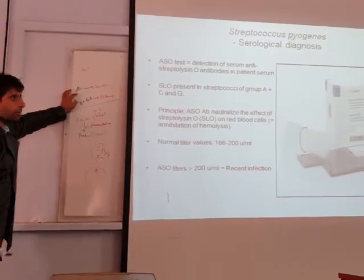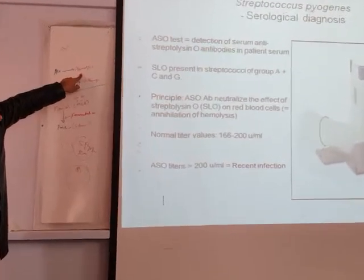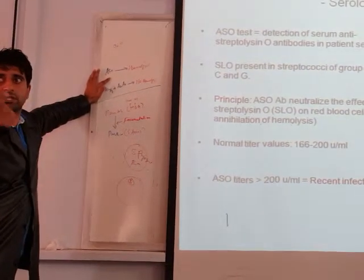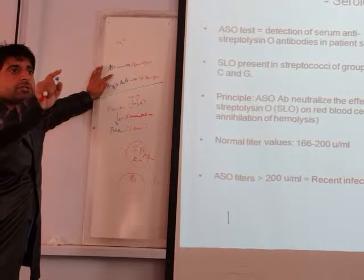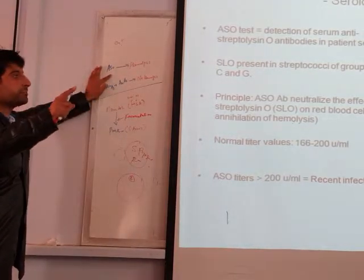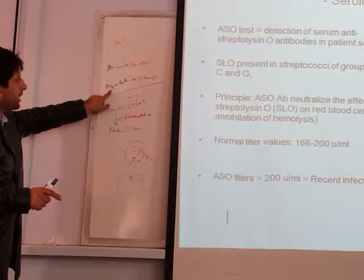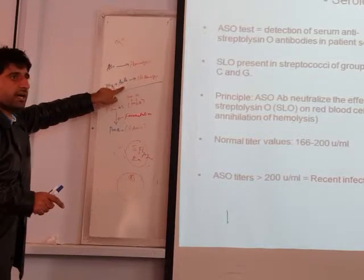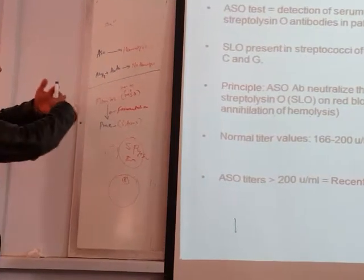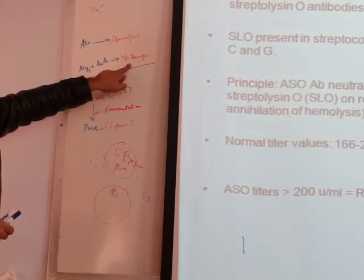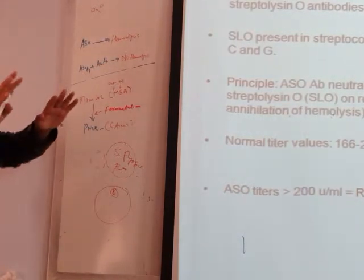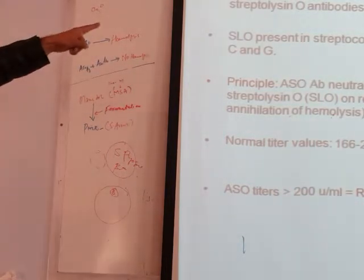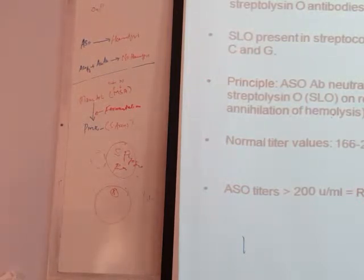If the ASO antigen is present, it will immediately destroy red blood cells. But as soon as the body forms the antibody against Anti-Streptolysin O, the antibody will bind with the antigen and stop the hemolysis. This is the basic principle of the ASO test.